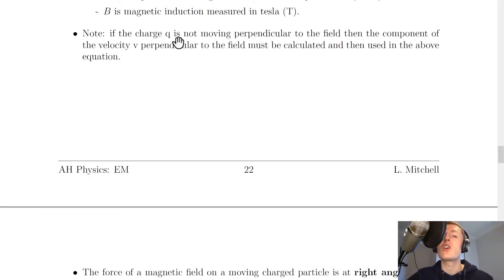Note that if the charge q is not moving perpendicular to the field, then the component of the velocity v perpendicular to the field must be calculated and then used in the above equation. And you'll see this in the case for charge moving at an angle to a magnetic field.